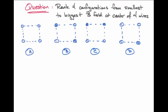In this example, we're asked to rank the magnetic field from each of these four configurations, evaluating the magnetic field at the center of the four wires.